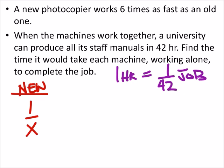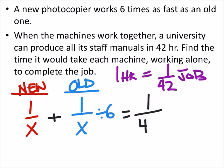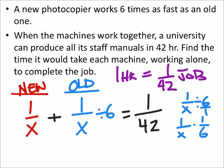The old machine completes the same as the new machine but divided by six, so in one hour the new machine completes 1/X and the old machine completes 1/6 of that — so 1/6X. That comes from taking 1/X divided by 6, which equals 1/X times 1/6, giving us 1 over 6X. Adding these two together should give 1/42 of the job.